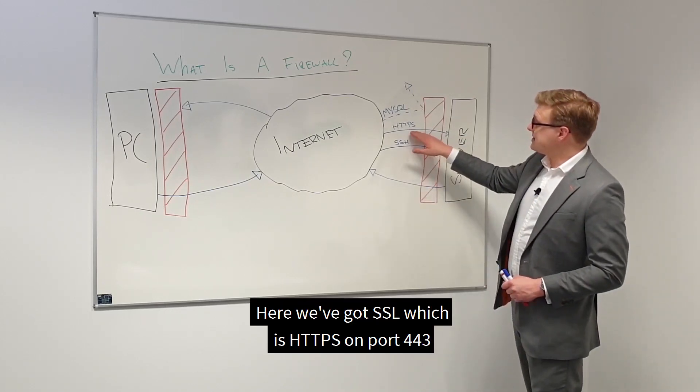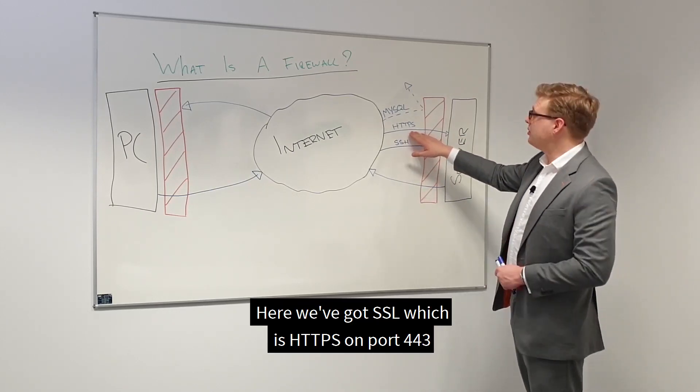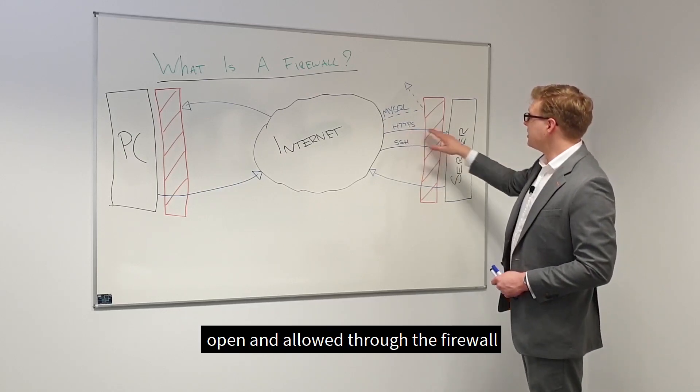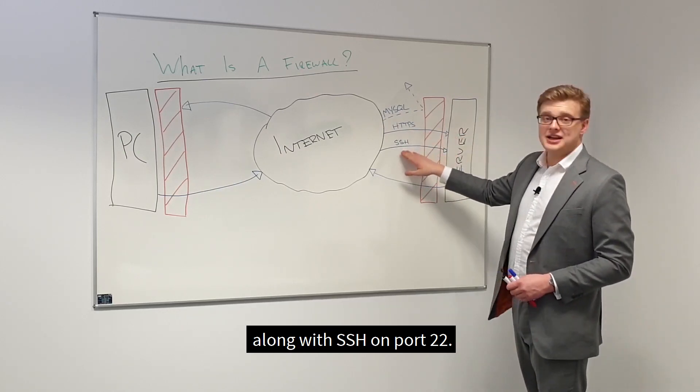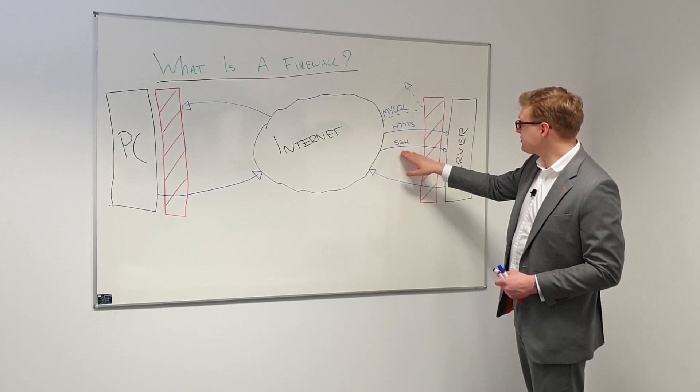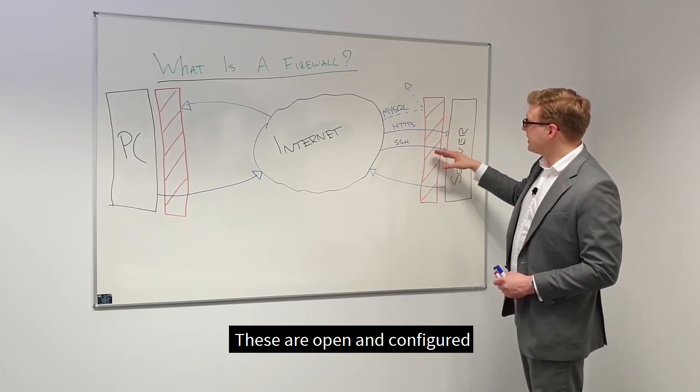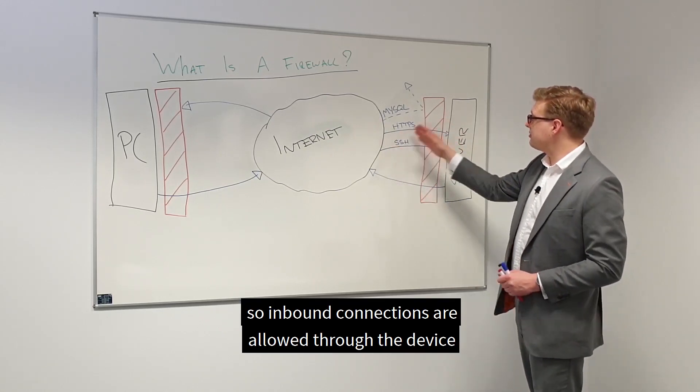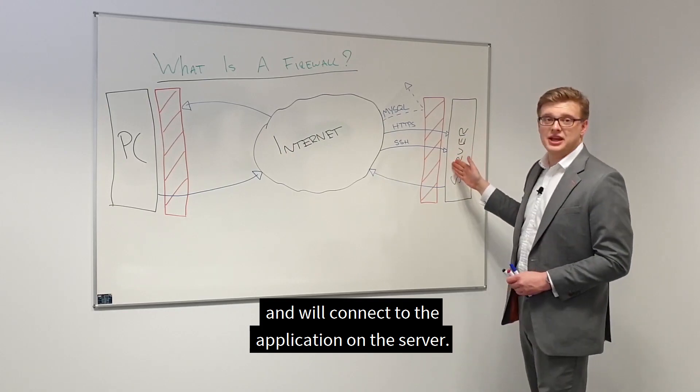Here, we've got SSL, which is HTTPS on port 443, open and allowed through the firewall, along with SSH on port 22. These are open and configured, so inbound connections are allowed through the device and will connect to the application on the server.